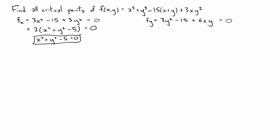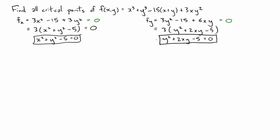We can do a similar thing for the partial derivative with respect to y — factor out a 3. The only way that partial derivative can be 0 is if y squared plus 2xy minus 5 is equal to 0. We want to find all values x and y for which both of these equations are true.